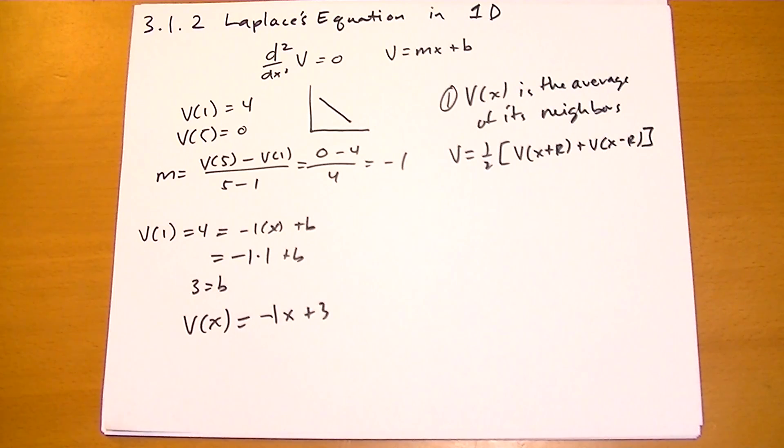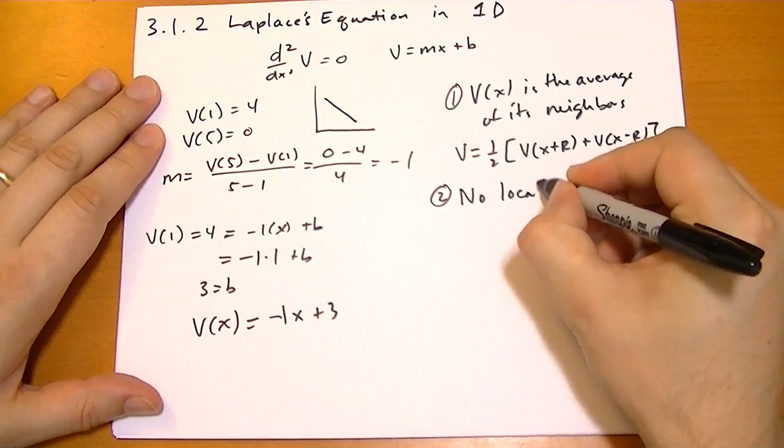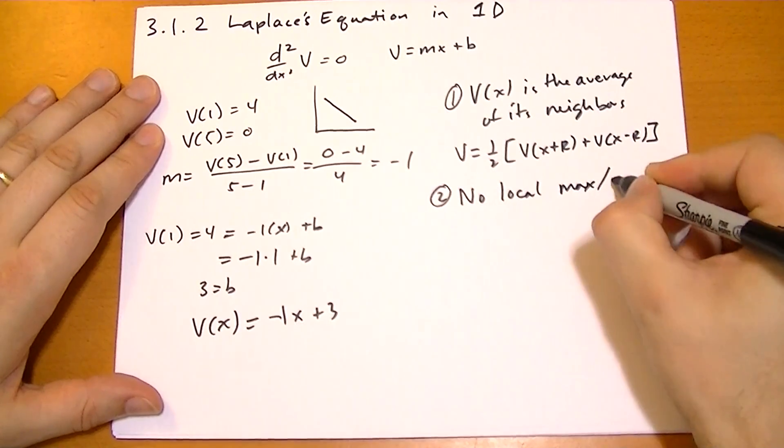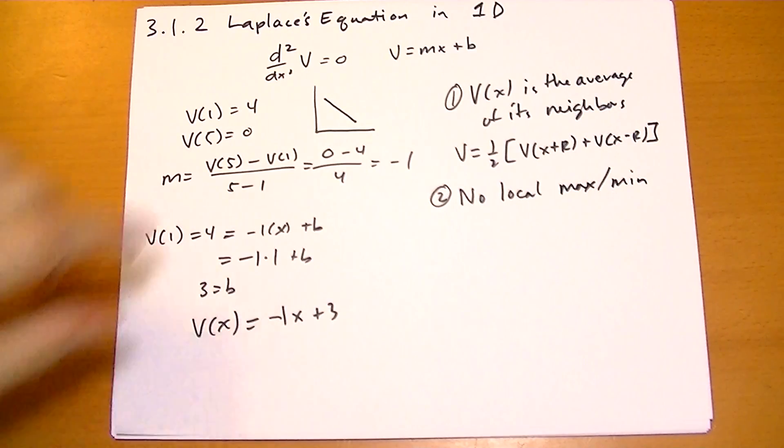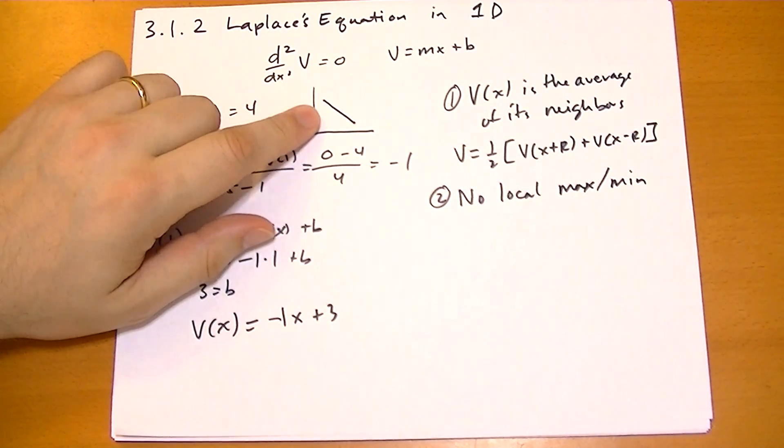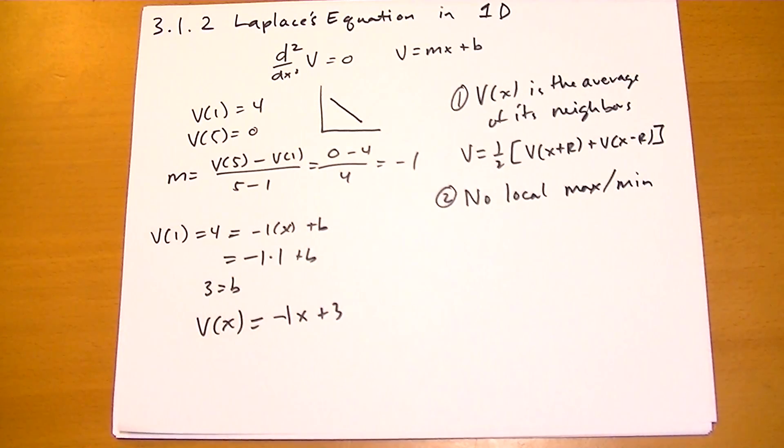The other thing that's interesting is that there is no local max or min. And looking at a straight line, that should be obvious. The max or min has to occur at the end points, unless you have it flat with no slope at all, in which case every place is a max and a min.